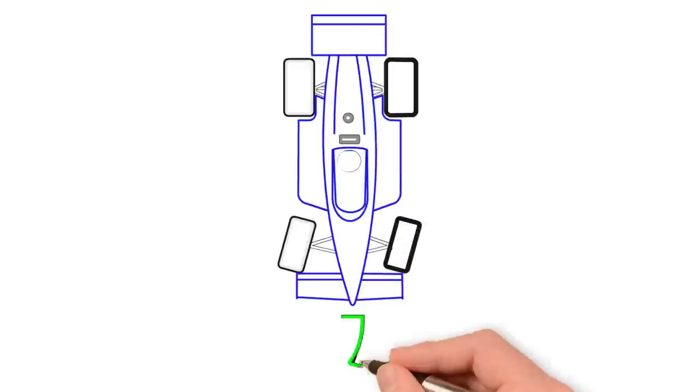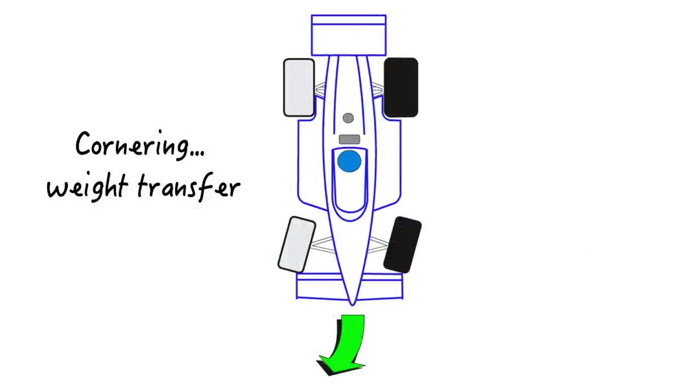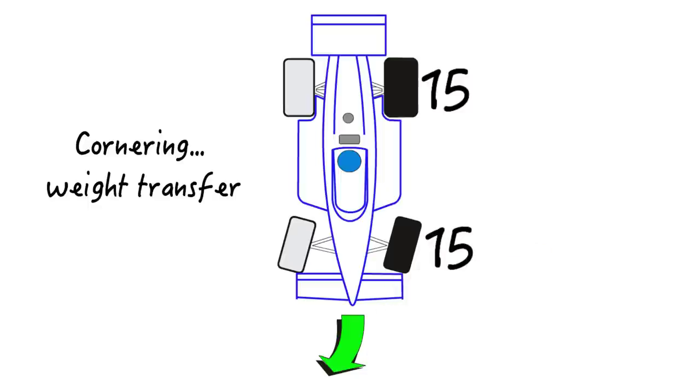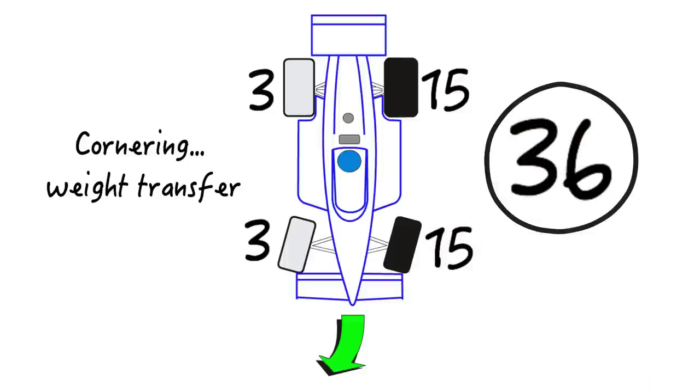So when your car goes around a corner and load is transferred to the outside tires, they gain traction. But the inside tires lose traction. If you used our conceptual tire traction gauge again, this is what we'd find. The outside tires have gained traction, they now have 15 units of traction each. But the inside tires have lost grip. They now have only three units of traction, which means that now your car only has a total of 36 units of traction holding it on the track. Yes, just when you need it most, in a corner, you actually have less traction because your car is not as balanced as it once was.